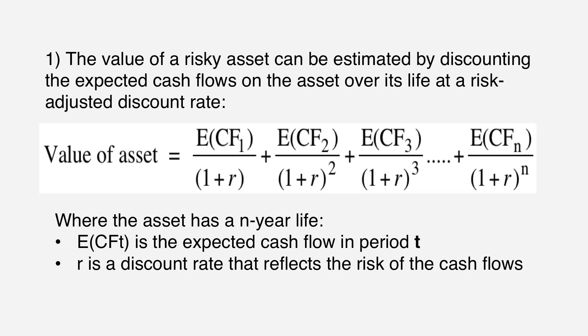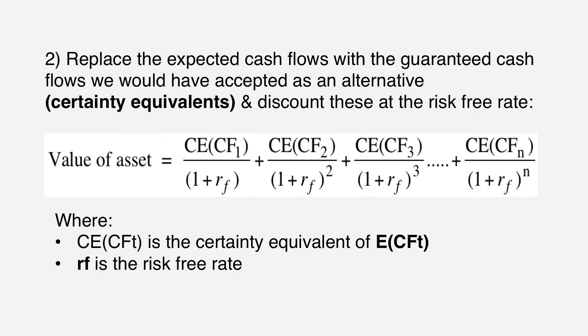Rather than adjusting the discount rate for risk, you can try to adjust the cash flow for risk. Let's assume you have $100 in expected cash flows next year but you're uncertain about those cash flows. Your risk adjusted cash flow will not be $100 — it will be whatever you would take as a guaranteed replacement. If you're risk averse and offered a choice between $100 of risky cash flows or some safe cash flow, you'd probably settle for a lesser number — 90, 95, 92. That's called a certainty equivalent cash flow.